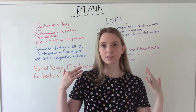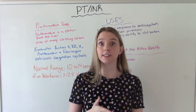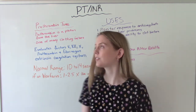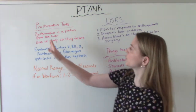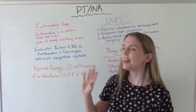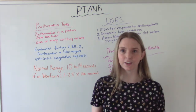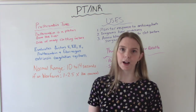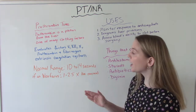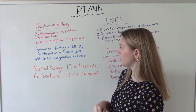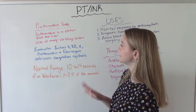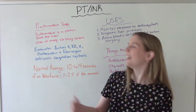The point of this test — what the PT shows us — is how fast the blood clots. That's what it's all about. PT stands for prothrombin time. Prothrombin, if you remember back from A&P, is a protein produced by the liver and it's one of several clotting factors we have in our body. This test evaluates the extrinsic coagulation system, specifically factors 5, 7, 10, prothrombin, and fibrinogen.